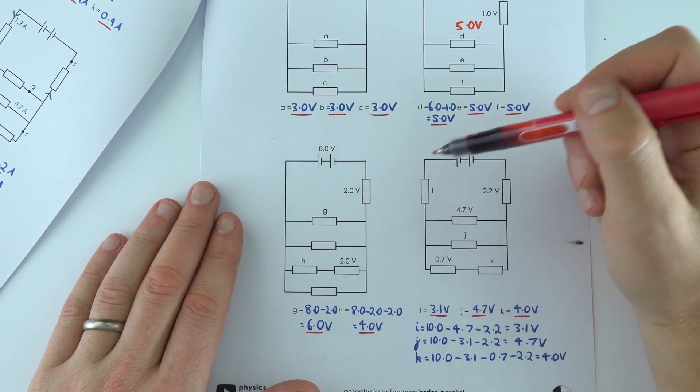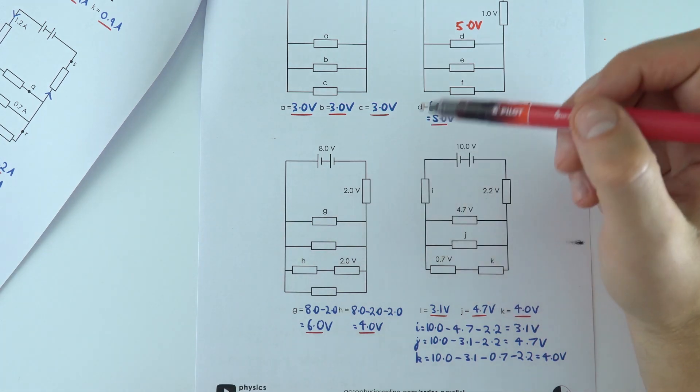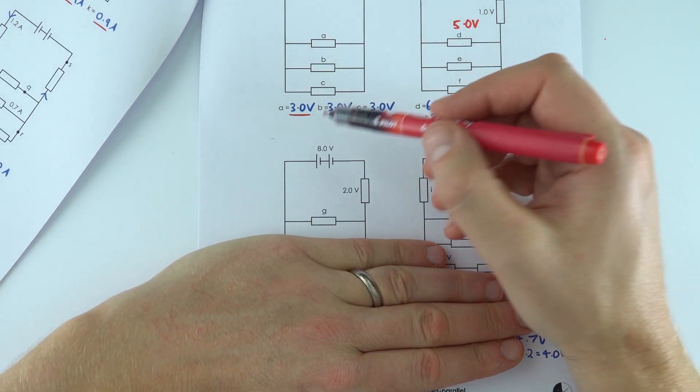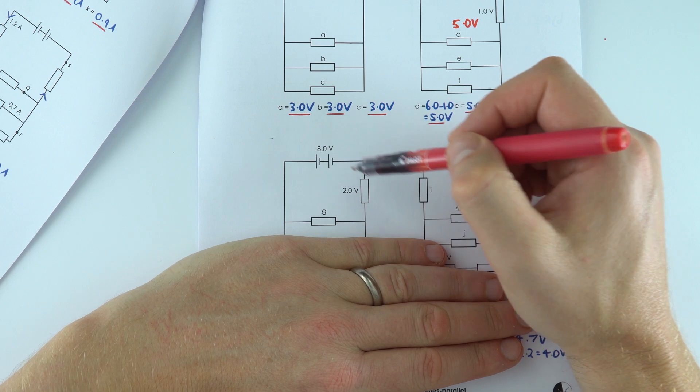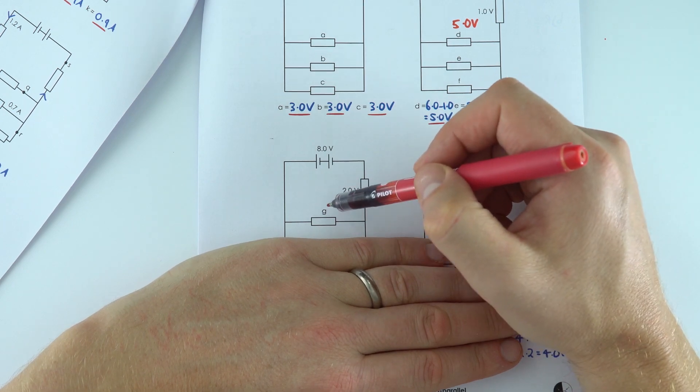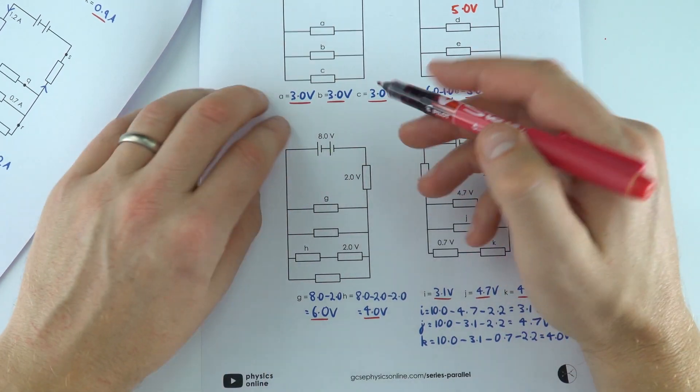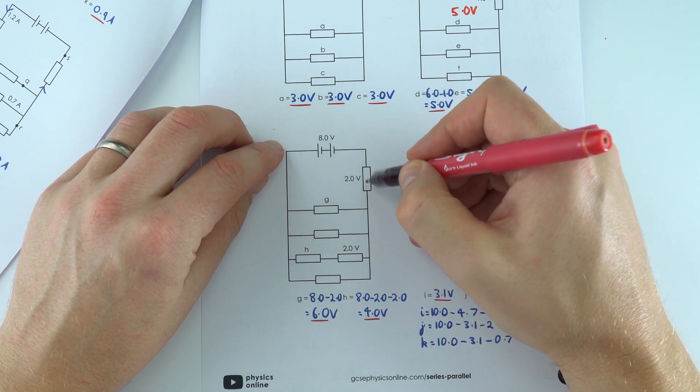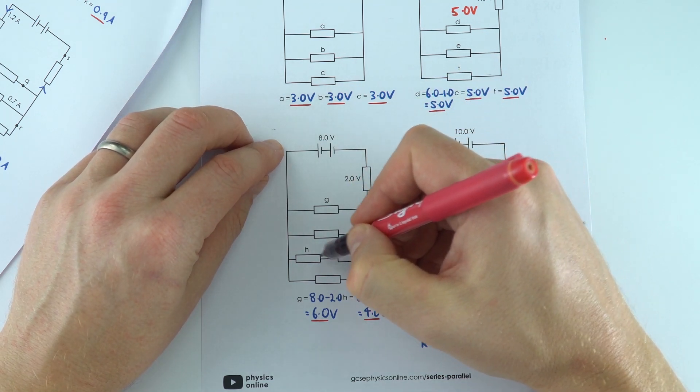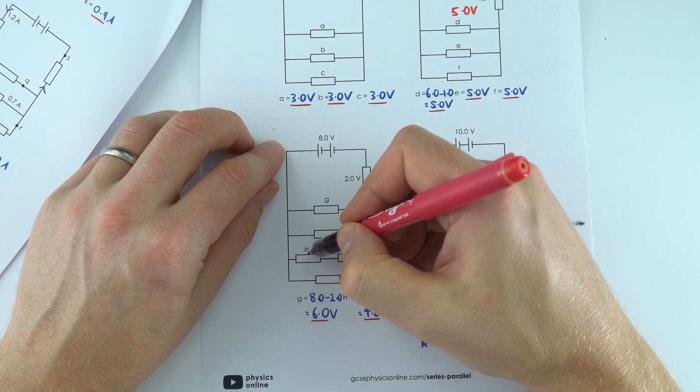For this one over here, again let's think about G. Well let's ignore the rest of the circuit. We've got eight volts across from that, two volts here leaves six volts across G. And if we think about the loop going through H, you've got eight volts, take away two, take away two, leaving four volts across H.